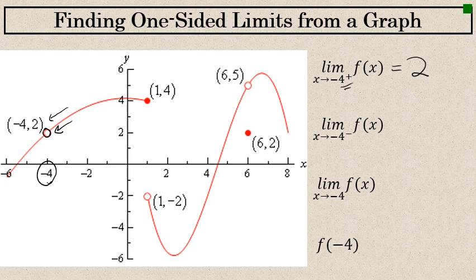The limit as x approaches negative 4 from the left — only from the left, I can see it's approaching that same point. From the left, this graph is approaching a point that would have a y value of 2. Because the limit from the right and from the left of negative 4 is approaching the same value of 2, that is the answer for the two-sided limit. The limit as x approaches negative 4 of f of x is also 2.